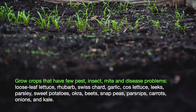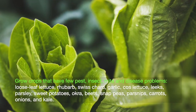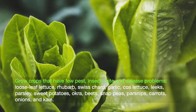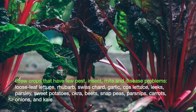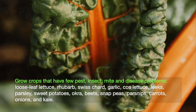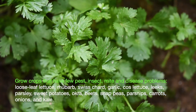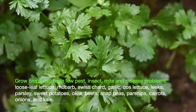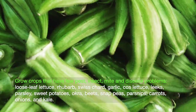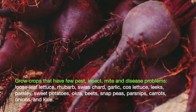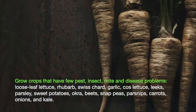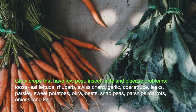Plants that have few insect, mite and disease problems include loose leaf lettuce, rhubarb, Swiss chard, garlic, cos lettuce, leeks, parsley, sweet potatoes, okra, beets, snap peas, parsnips, carrots, onions and kale.